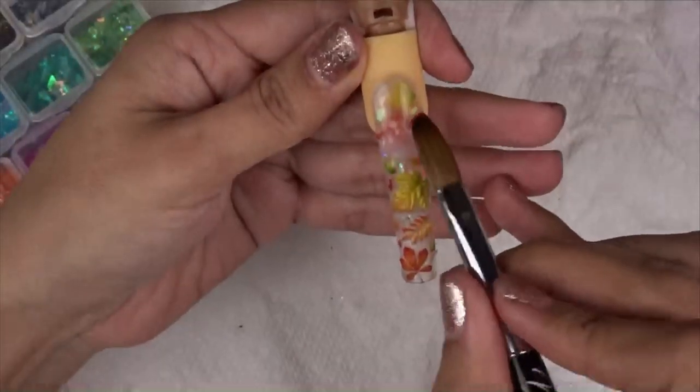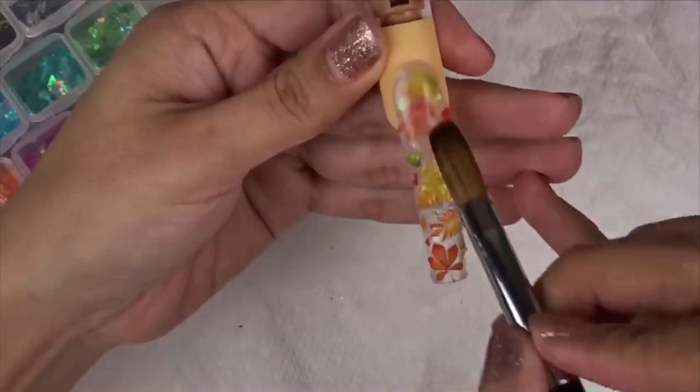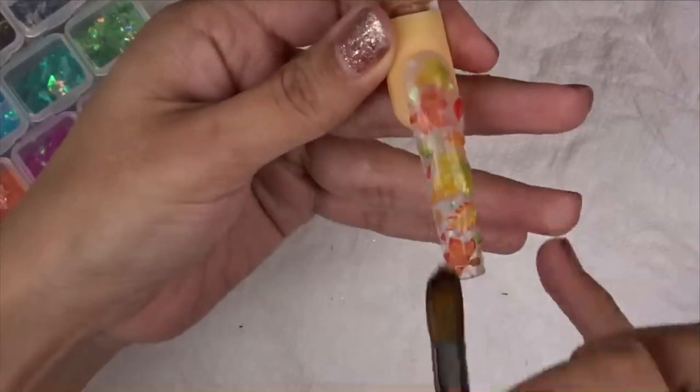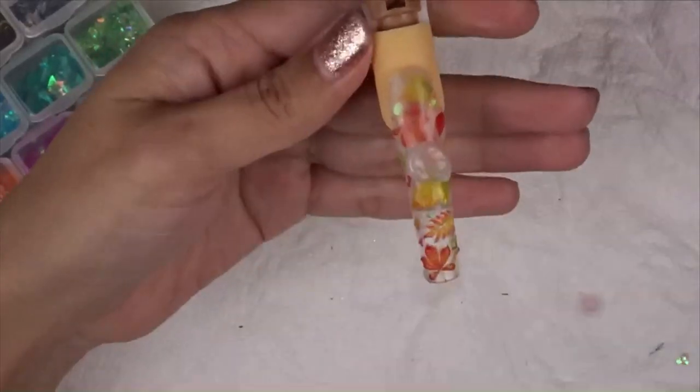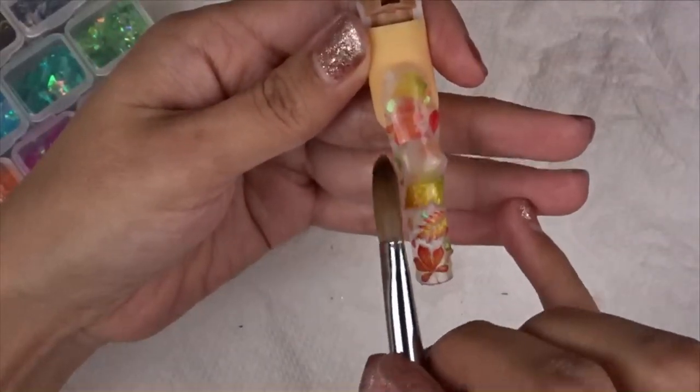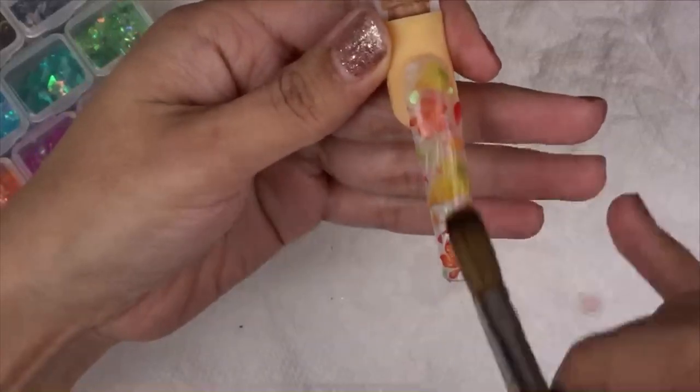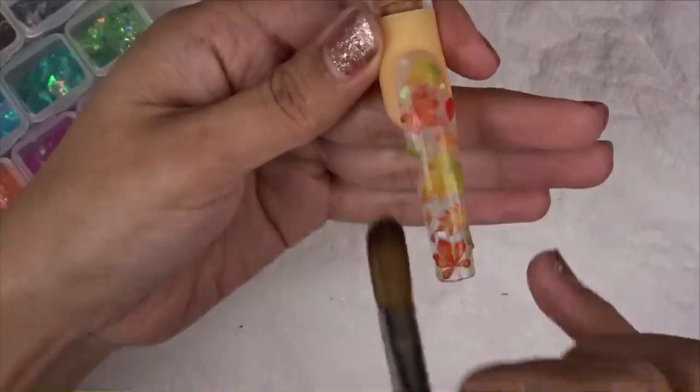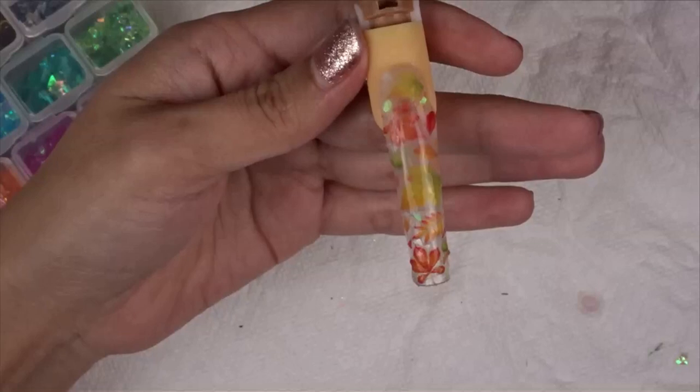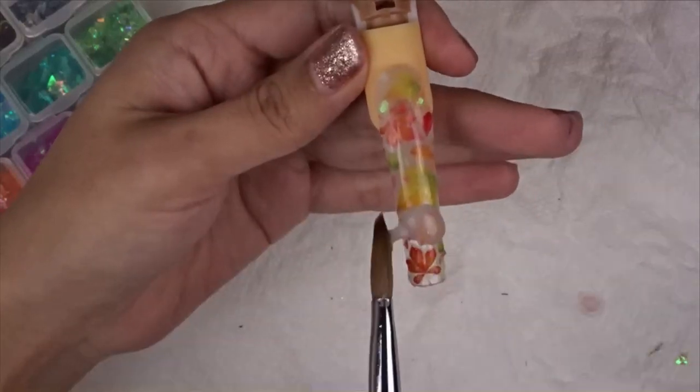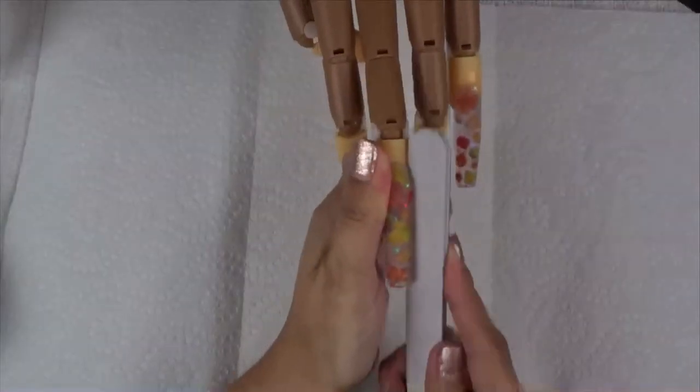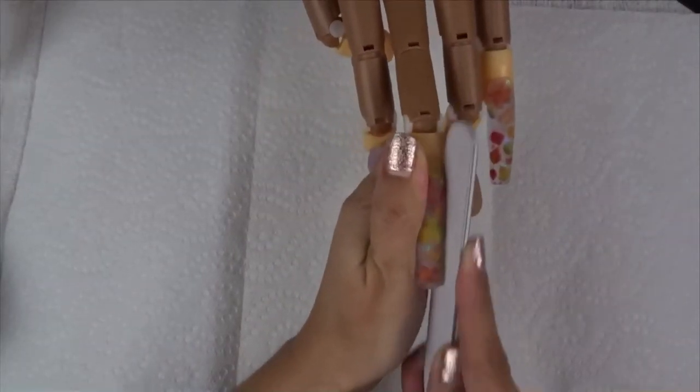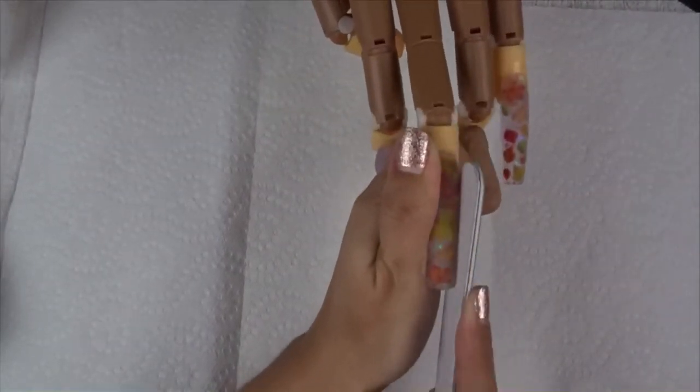I do encapsulate this one just to get a nice apex and to give it strength. You don't have to, you can always build the colors up themselves, but I just felt it was easier to just fully encapsulate it and build with clear. So here I was done already putting the mylar glitter, and I'm just encapsulating this nail as well as the other fall leaf nail. The ombre I don't encapsulate the index fingernail because that one's just full clear, that one I just build it up to be a clear nail.